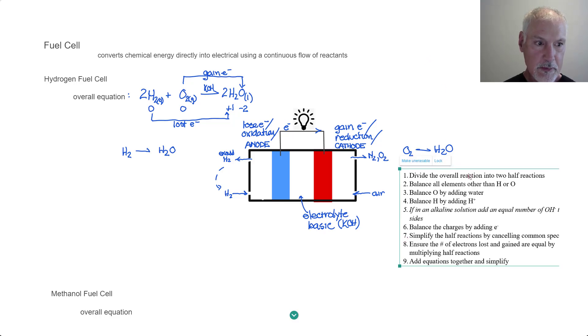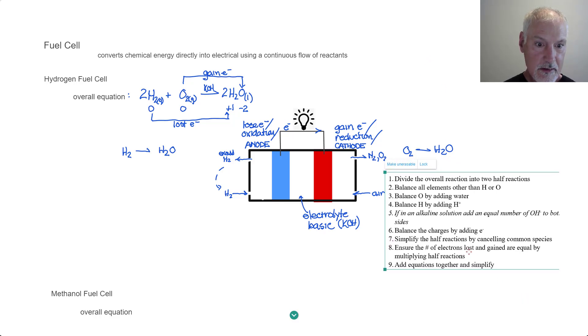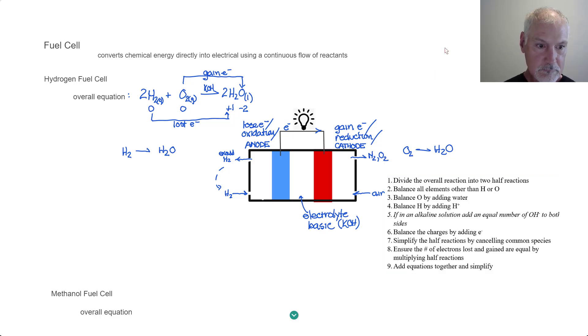Now let's proceed to balance these two half reactions. To do that, I'm going to employ a set of rules over here or steps. First thing we have to do is divide the overall reaction into two half reactions, which we have already done. Balance the elements other than hydrogen and oxygen. Well, in this case, there isn't any. Balance the oxygens by adding water. Well, this side has no oxygen, so I must add a water to it.